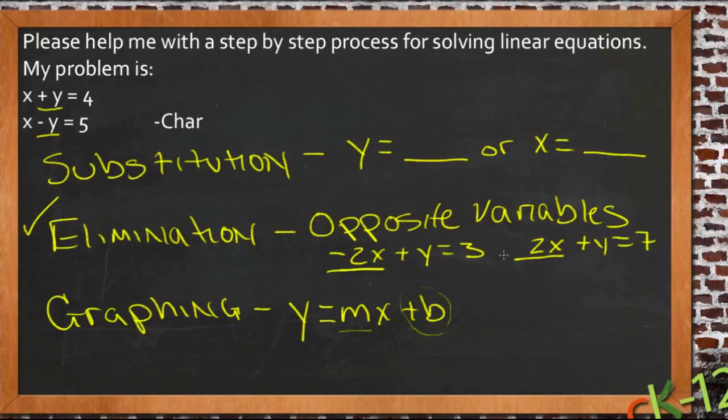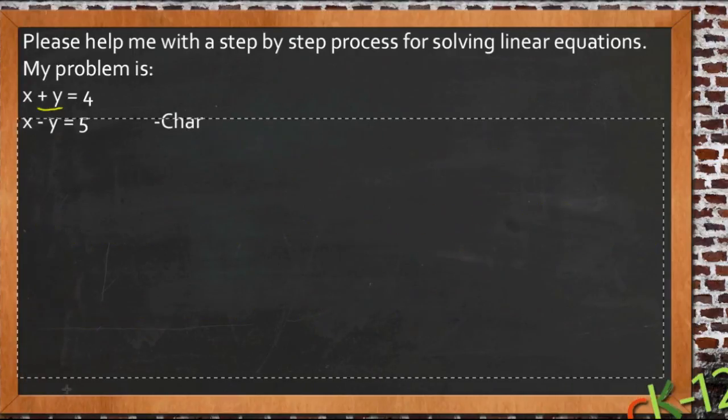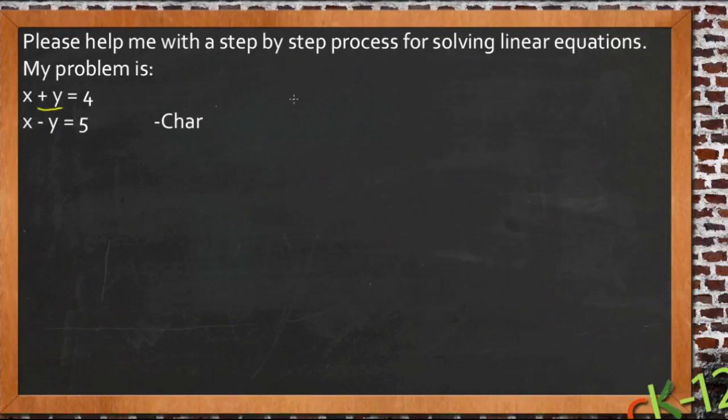So let's do that. Let's use elimination. Let me get rid of this other information here real quick to give us some space to work. And let's solve these two things with elimination. We're just going to write these directly on top of each other since one of the variables is already opposite.